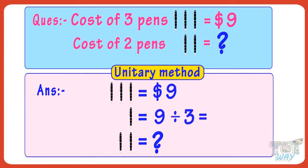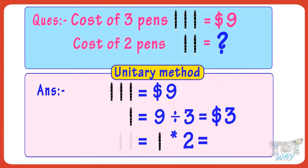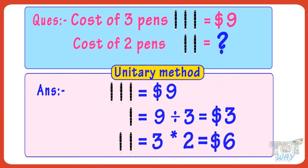And 9 divided by 3 equals 3. So the cost of one pen is $3. Now we have the cost of one pen. The cost of two pens will be the cost of one pen multiplied by 2. The cost of one pen is $3, so 3 multiplied by 2 equals 6. So the cost of two pens is $6.